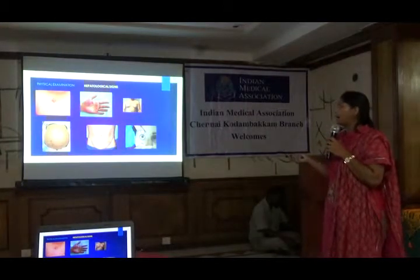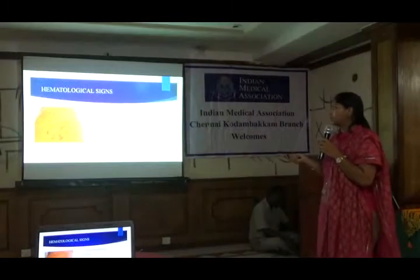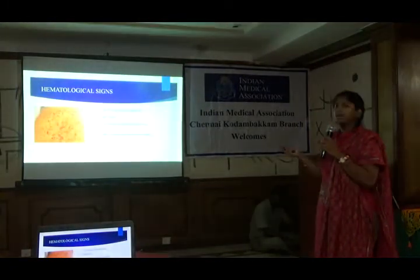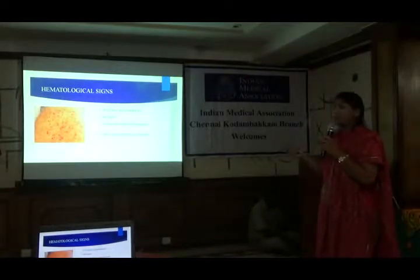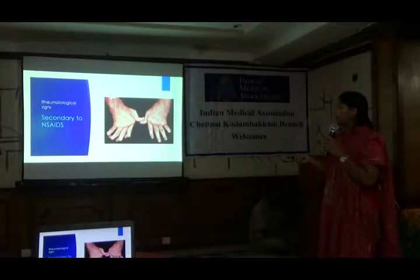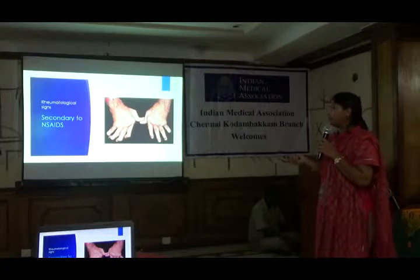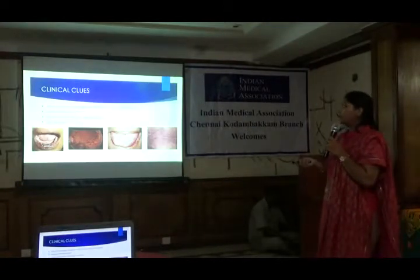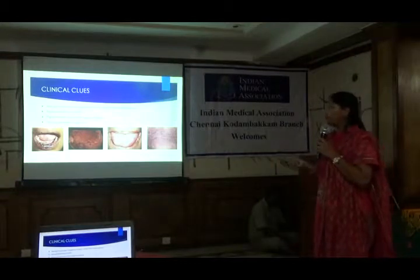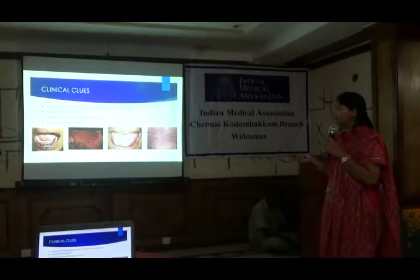Signs of variceal bleed include spider angiomas, palmar erythema, gynecomastia, ascites, caput medusae, and jaundice. Other signs like petechiae can indicate bleeding diathesis or drug-induced aplastic anemia. Joint deformities may suggest long-term NSAID use, pointing to NSAID-induced non-variceal bleed. Rare conditions like Peutz-Jeghers syndrome require looking for mucosal lesions, and new-onset acanthosis nigricans may suggest an internal malignancy.